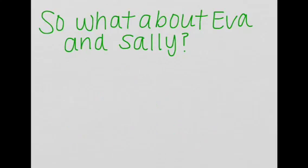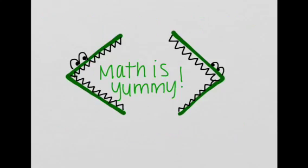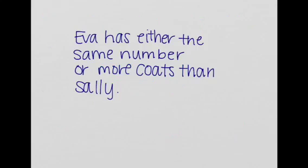So what about Eva and Sally? Let's go back to Eva and Sally. So it says Eva has either the same number or more coats than Sally. So what we would do is we would have Eva is greater than or equal to Sally if we have the coat number.